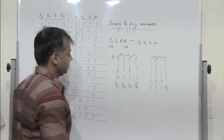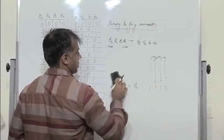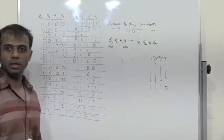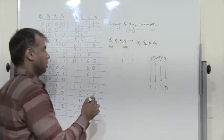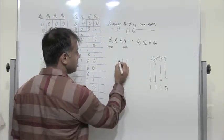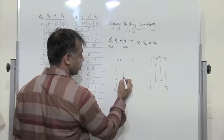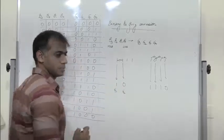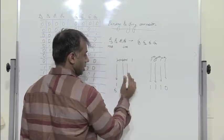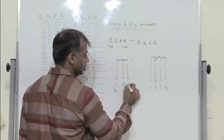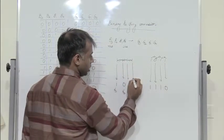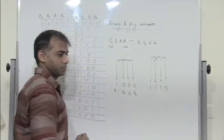Let's take another example: 1, 1, 1, 1. How do we convert this binary data to gray? B3 is written as it is — 1 — which becomes G3. XOR these two: 1 XOR 1 is 0, which is G2. Again XOR these two, which gives G1: 1 XOR 1 is 0. XOR these two bits: 1 XOR 1 is 0, so I get G0.